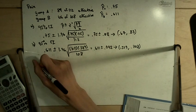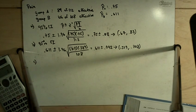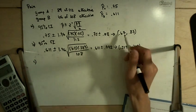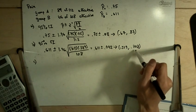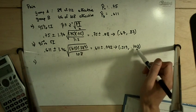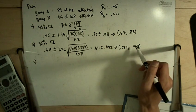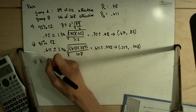So part C asks, do they overlap? And the answer is yes. On here, it goes all the way down to 0.67. And over here, our confidence interval goes all the way up to 0.703. So there is a little bit of overlap. Yes, there is some overlap.